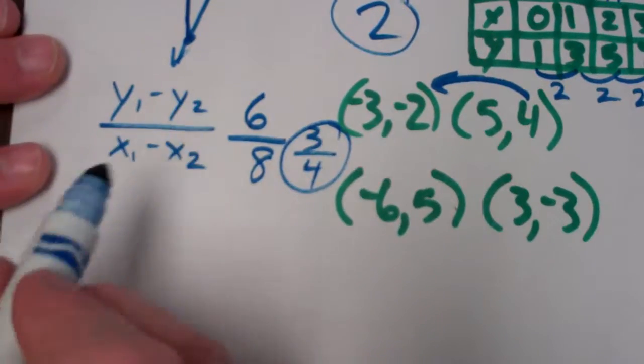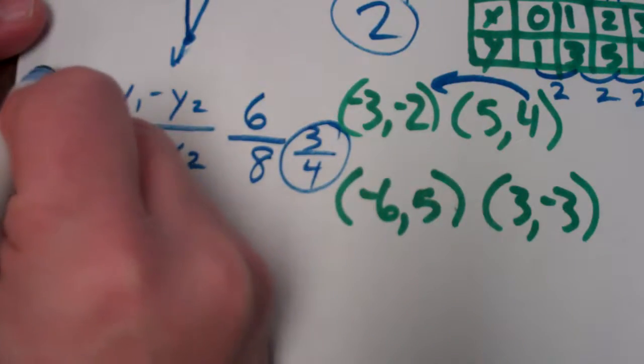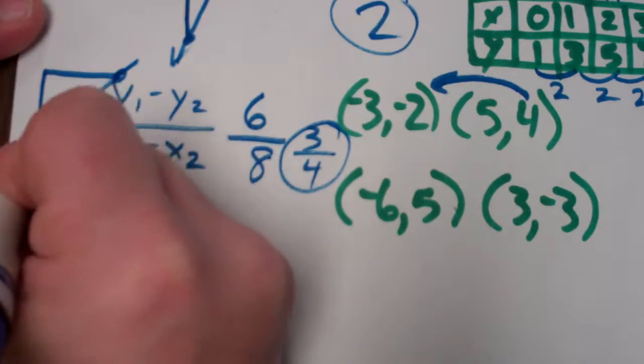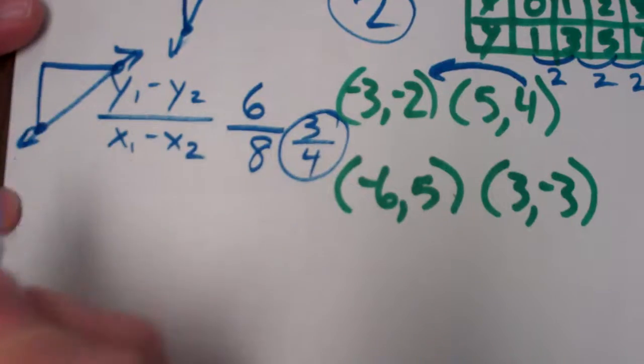Your stair step is up 3, right 4. So, go back to that stair step idea. That would be going up 3, right 4. It would look something like that when you graphed it.